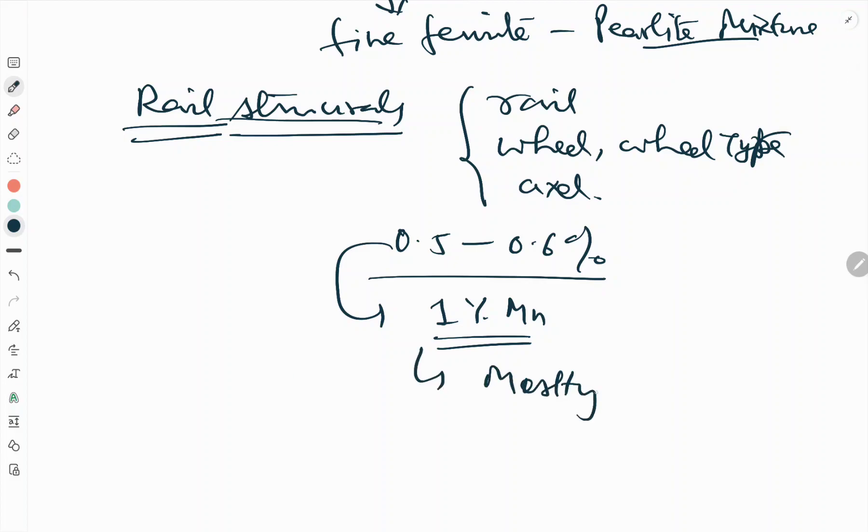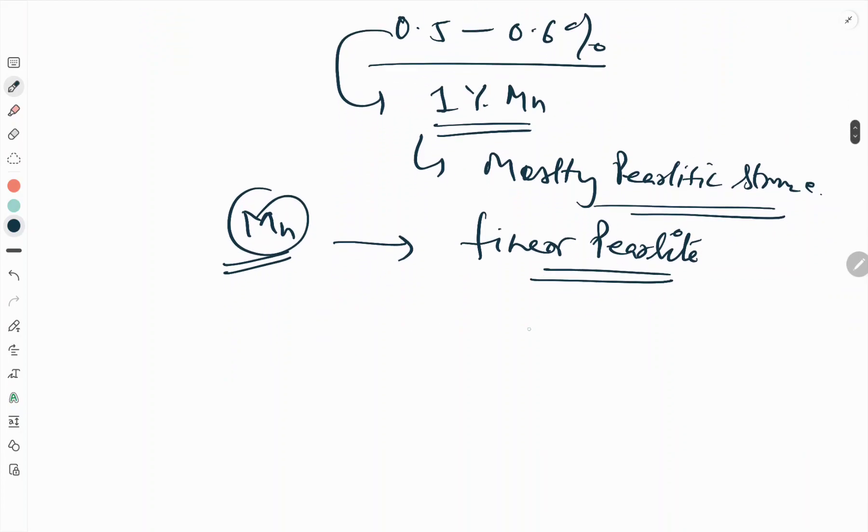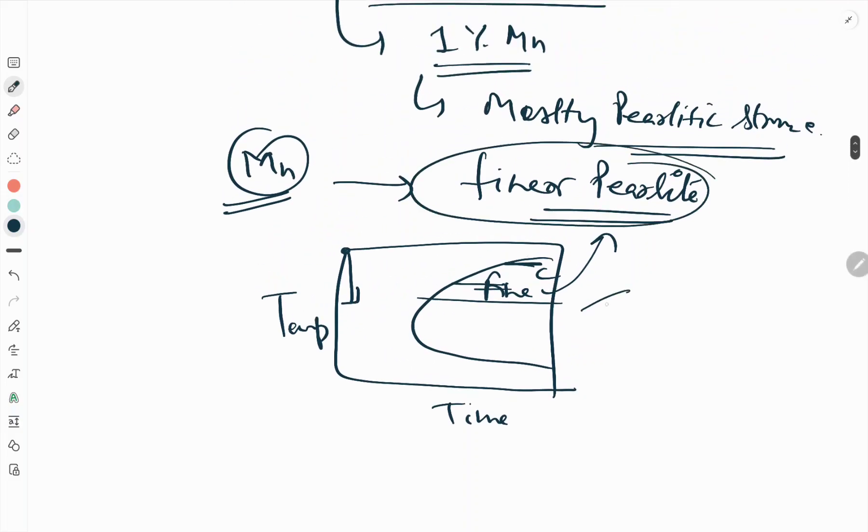The lowering of the transformation temperature by Mn results in finer pearlite. We have seen in the TTT diagram, the temperature-time diagram. If the curve is like this, when the temperature is lowered, here we got coarse pearlite and in this region we got fine pearlite. The lowering of the temperature by Mn results in fine pearlite.